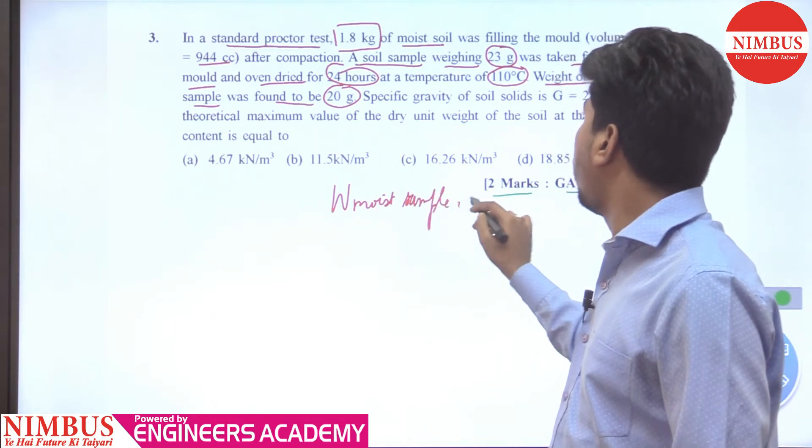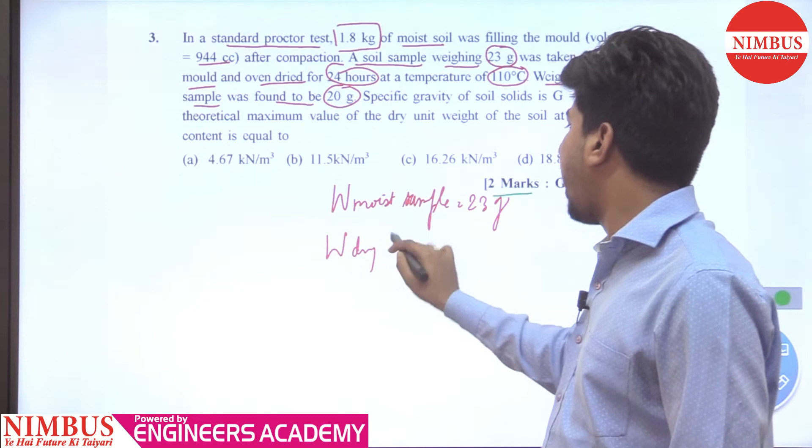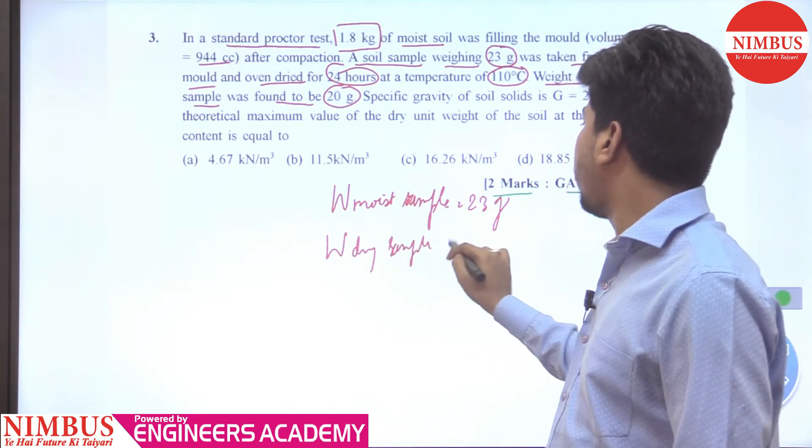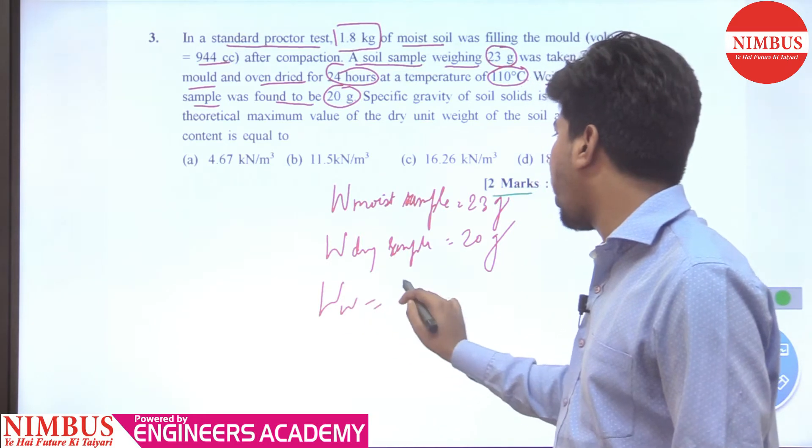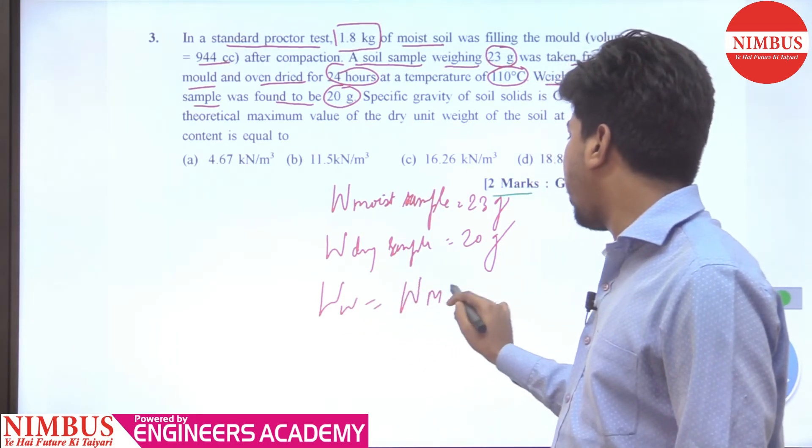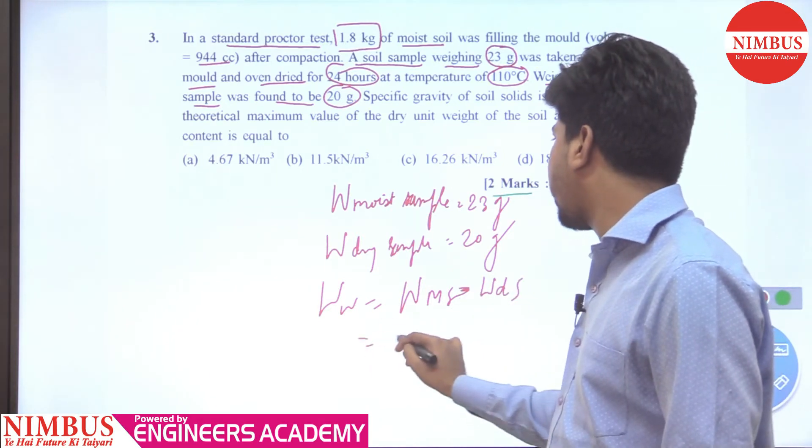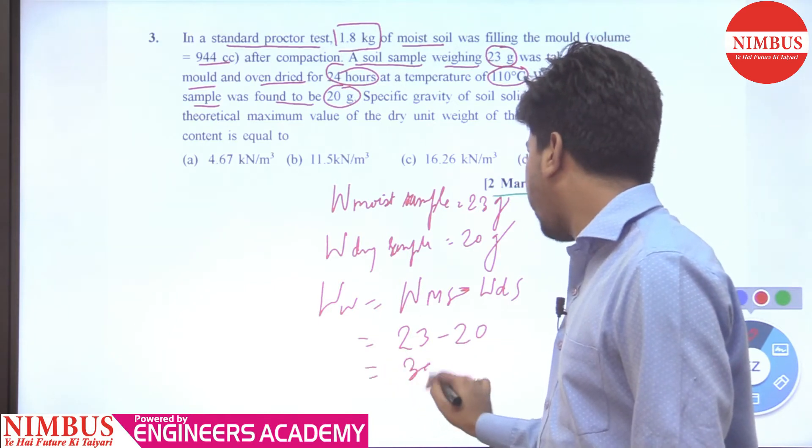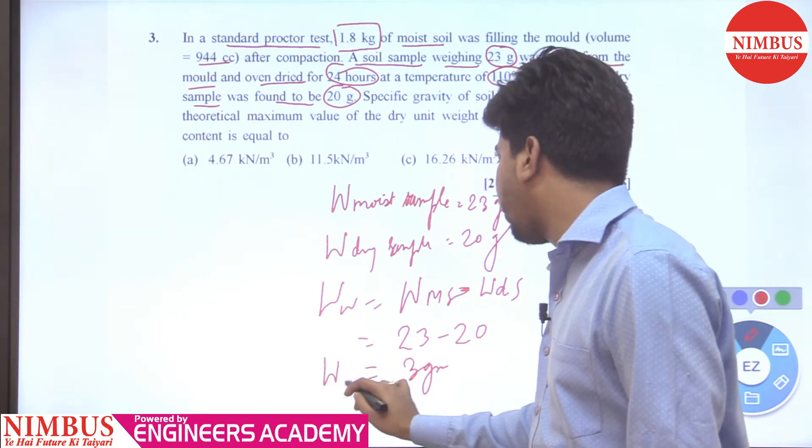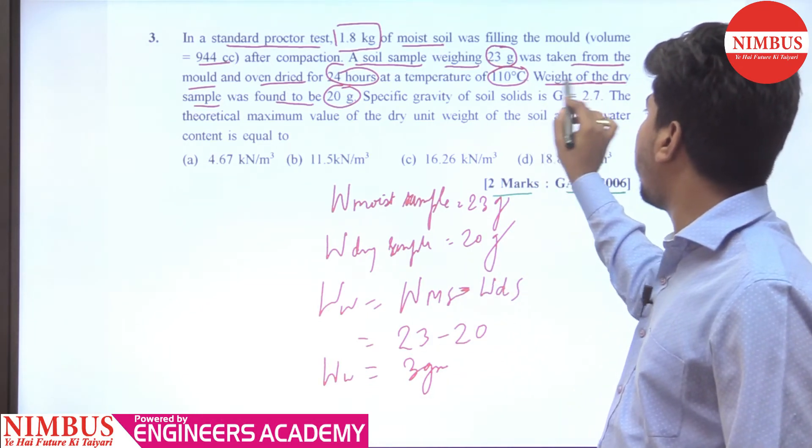So we have two values: the weight of the moist sample which is equal to 23 grams and the weight of the dry sample which is equal to 20 grams.